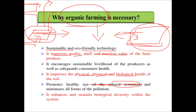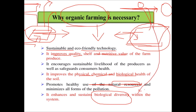Last but not least, organic farming enhances and sustains biodiversity within the system. If you use a chemical in a field, it doesn't only harm the target pest — it also kills beneficial insects that are favorable to the field. In this way, biological diversity within the system gets disrupted, which needs to be prevented. Organic farming is one method that helps contribute to preserving that diversity.